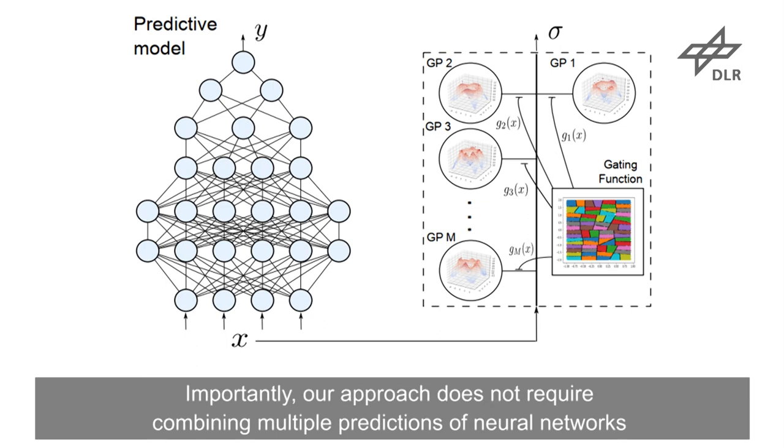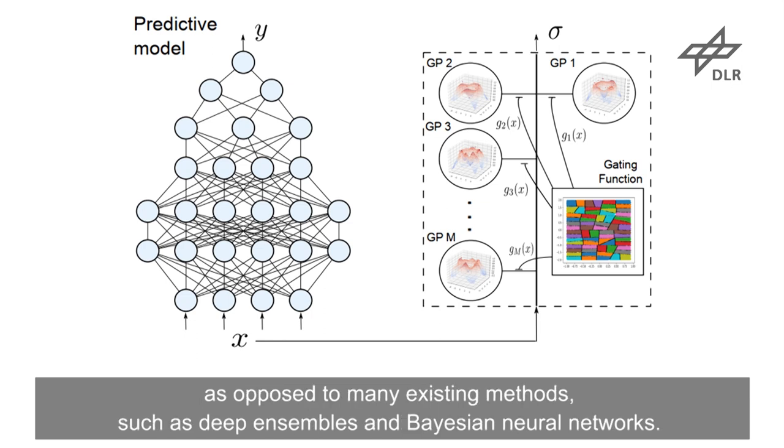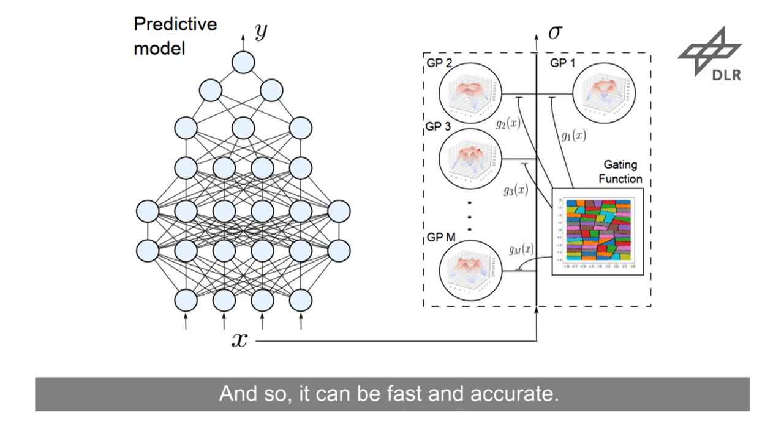Importantly, our approach does not require combining multiple predictions of neural networks, as opposed to many existing methods such as deep ensembles and Bayesian neural networks, and so it can be fast and accurate.